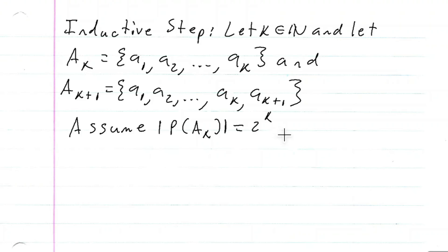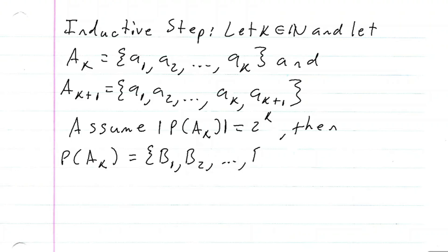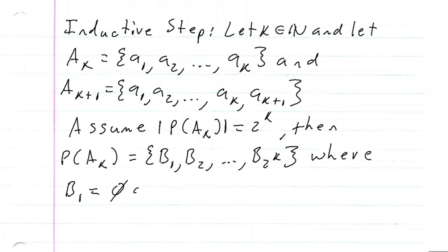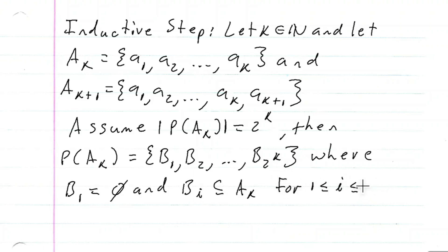So then we have that the power set of A sub K has elements B sub one, B sub two, ..., B sub two to the K. So it has two to the K elements, where all these B's are subsets of A sub K — because that's the definition of the power set. We let B sub one be the empty set, and B sub I is a subset of A sub K for one less than or equal to I less than or equal to two to the K. Basically, all of these B's from one to two to the K are all subsets of A sub K, and we're assuming there are going to be two to the K of these subsets for the power set of A sub K.